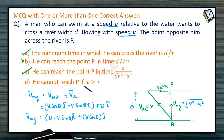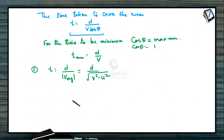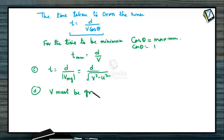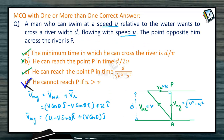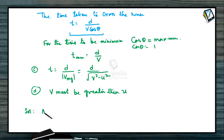Option D says he cannot reach point P if U is greater than V. The time taken must be a positive real value, and this is only possible when V is greater than U. So option D is also correct. Therefore, the correct options for this problem are A, C, and D.